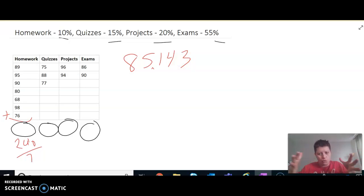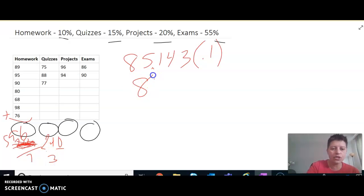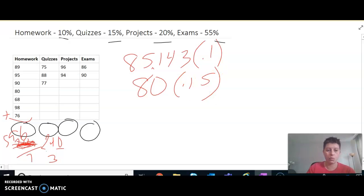And to find our average, I'm going to write my equation out as we go. I'm going to multiply that by my weighted average, which is 10%. That's my homework. Now, for quizzes, I add those three up and I get 240. 240 divided by three. So my quiz average is 80. I'm going to multiply that by the weighted average of 15%. Projects, we add those together. We get 190 divided by two. So that category average is 95. We're going to multiply that by 20%.